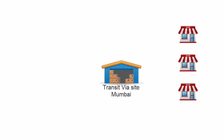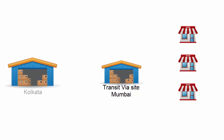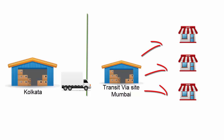We set up a transit via site in the destination location, which in our case is Mumbai. At first, all the goods in the Kolkata warehouse are transferred to the transit via site in Mumbai, and then these goods are distributed to their respective stores from the transit via site. This results in comparatively less transportation charges.